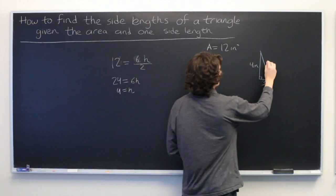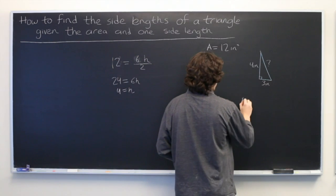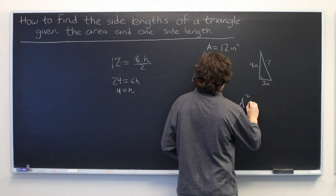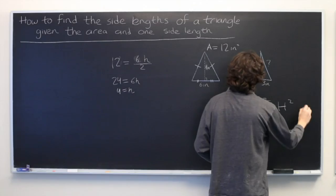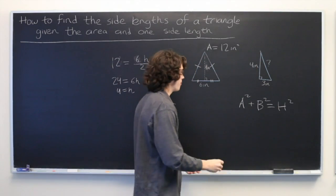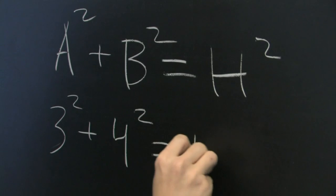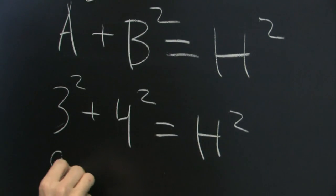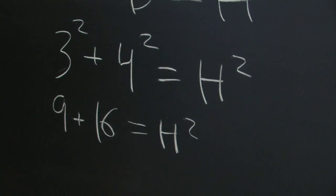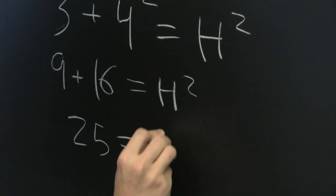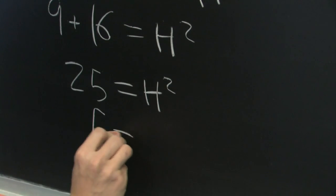So, all we need now is this side. We can simply use the Pythagorean theorem, which tells us that the length of one leg squared plus the length of the other leg squared is equal to the hypotenuse squared. So, let's just plug in the values that we know: 3 squared plus 4 squared equals h squared. That's 9 plus 16 equals h squared. Add these up and we get 25 equals h squared. Then from here, we simply take the square root of both sides and we find that our missing side length is 5.